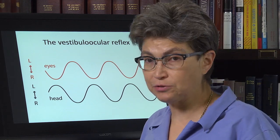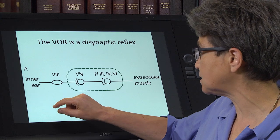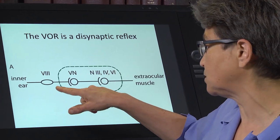Gaze equals eyes plus head. Gaze is going to equal a steady line here. Every movement of the head is opposed by a movement of the eyes. How does that work? Well, it turns out to be a disynaptic reflex.